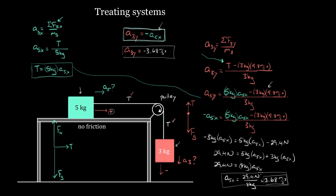Turns out you'll always get this. What you'll end up with after solving this the hard way is all the external forces added up on top — where forces that make it go, like this force of gravity, end up being positive, and forces that try to resist the motion, like friction, would be negative. And then you get the total mass on the bottom.